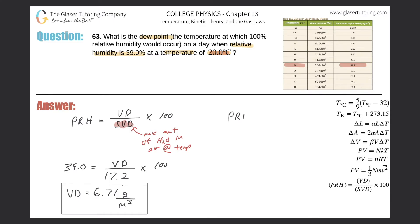Percent relative humidity equals the vapor density divided by the saturation vapor density, multiplied by 100. What they told us is now we're dealing with 100% relative humidity, so I'm going to plug in 100.